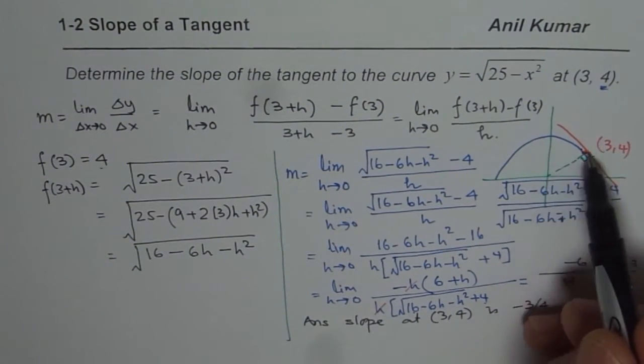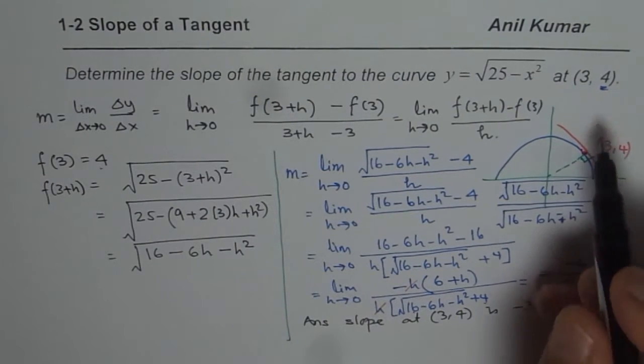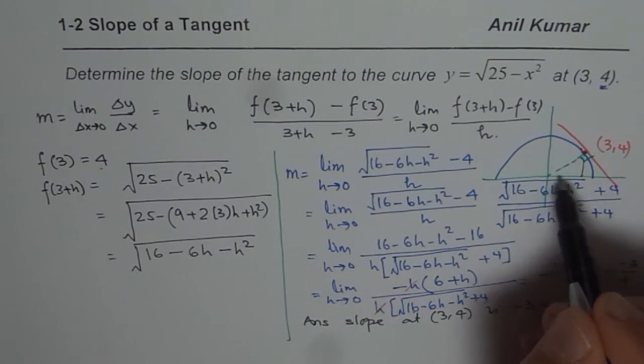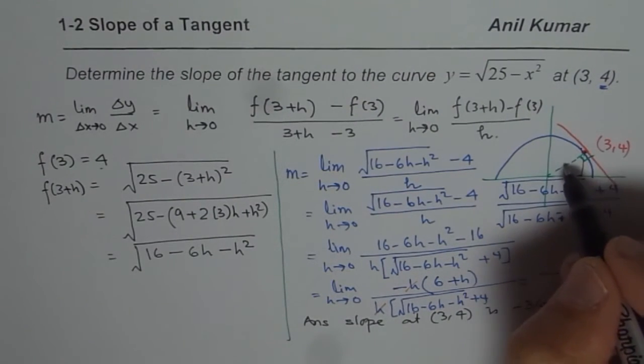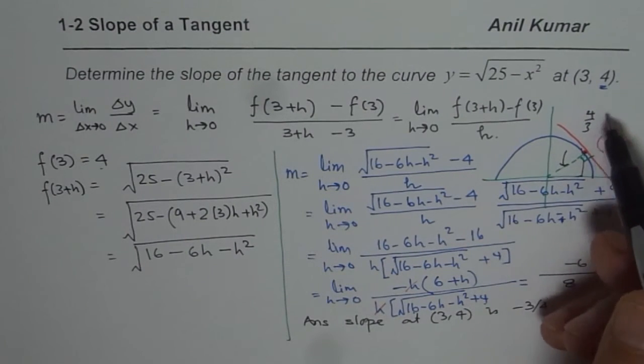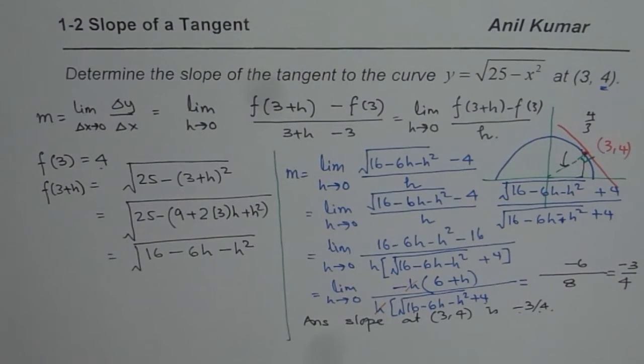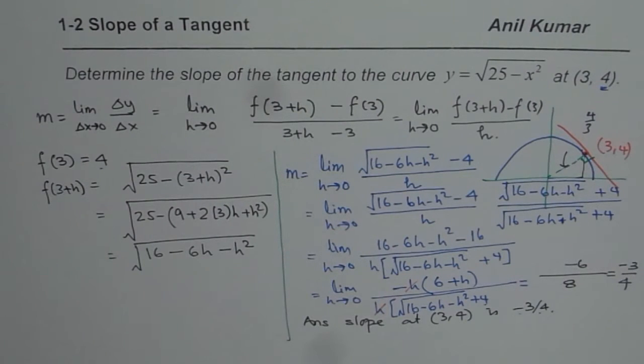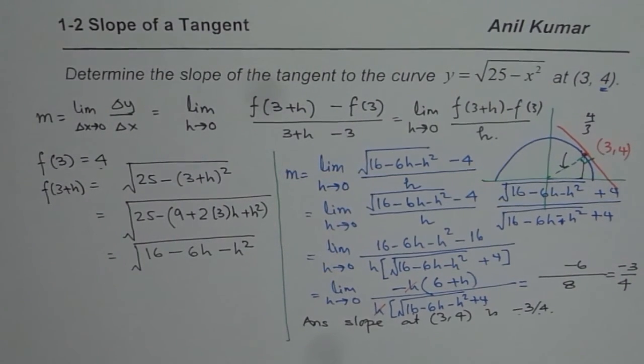You can also verify that if I see the slope of this point from origin, rise is 4 and run is 3. So the slope of radius is 4 over 3 and negative reciprocal is minus 3 over 4. So that verifies that your answer is correct. I hope that helps. Thank you and all the best.